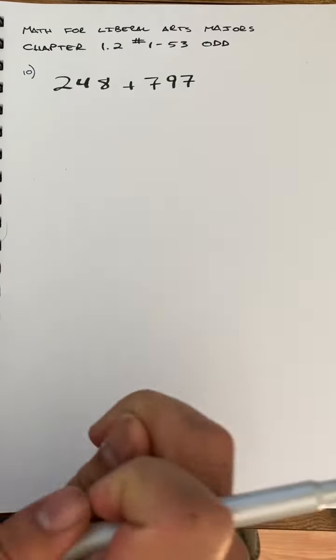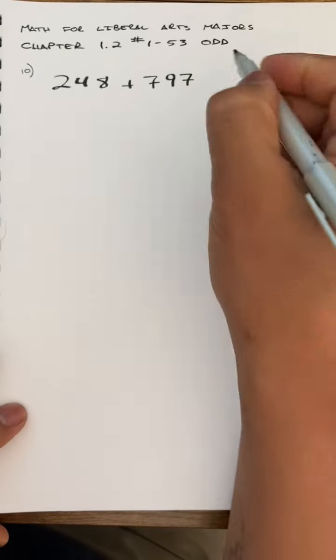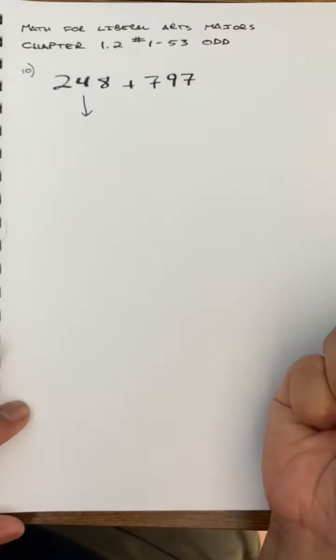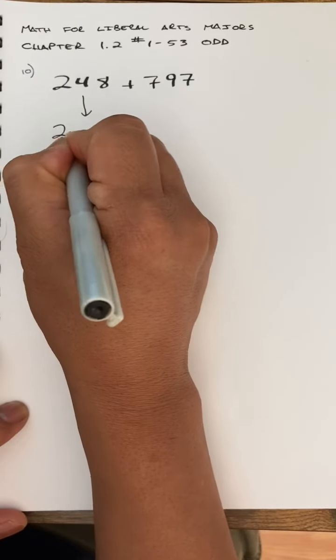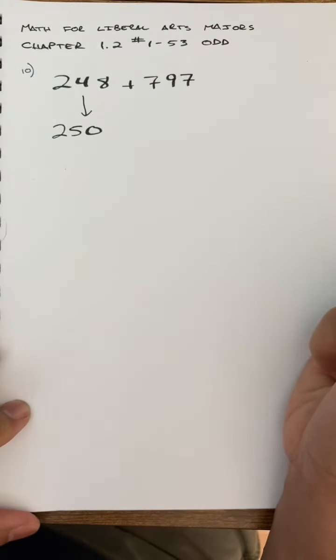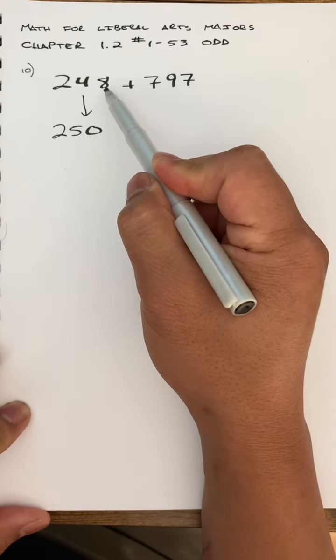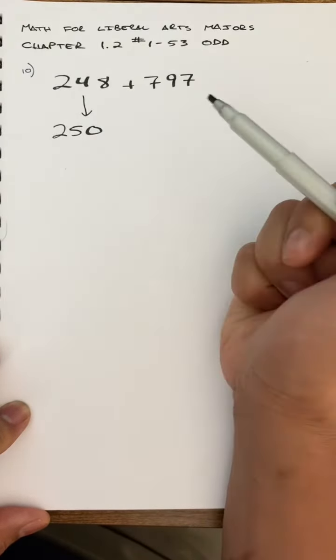So step one is to do your estimate. My estimate, 248 - I'm going to round that to 250. I just like the number 250. Also this 8 bumps up really nicely.